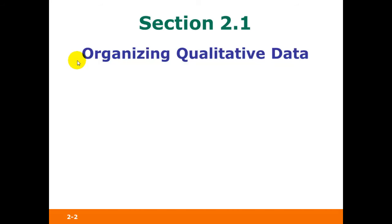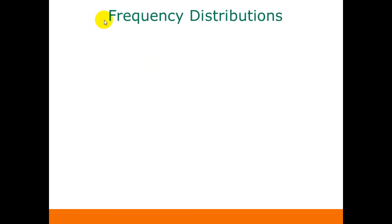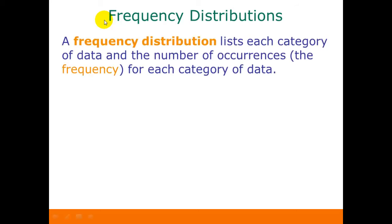First we'll talk about Section 2.1, which is about organizing qualitative data. When we talk about a table in statistics, we're usually talking about what we call a frequency distribution. A frequency distribution lists each category of data and the number of occurrences, in other words the frequency, for each category of data.